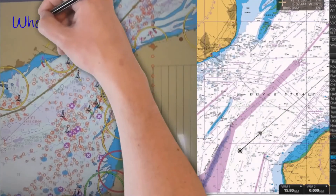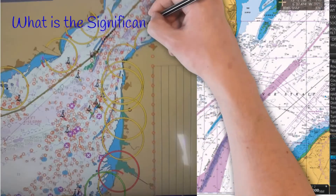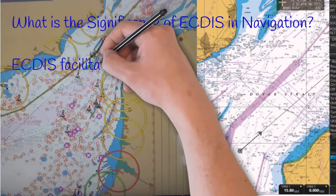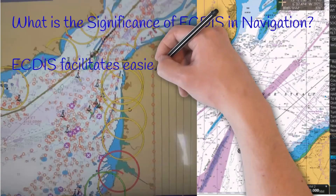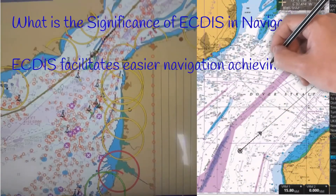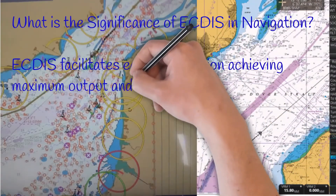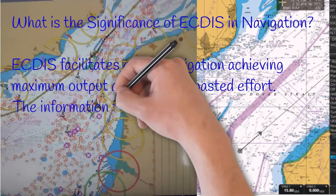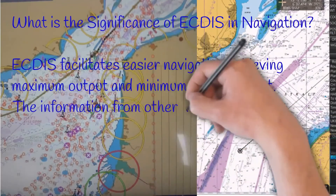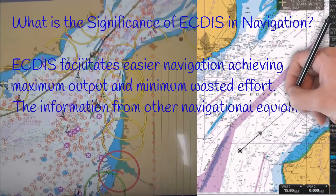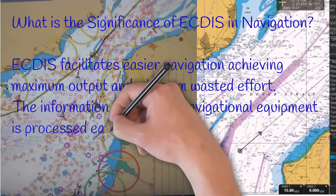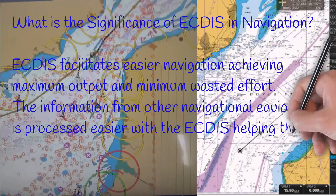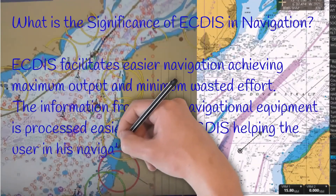What is the significance of ECTIS in navigation? ECTIS facilitates easier navigation, achieving maximum output and minimum wasted effort. The information from other navigational equipment is processed easier with the ECTIS, helping the user in his navigation and decision making.